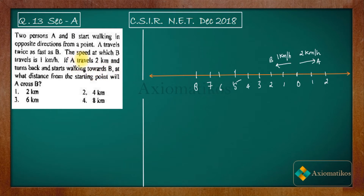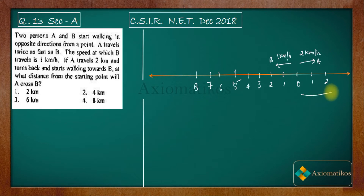A is traveling in one direction, but after traveling two kilometers he will turn back and start walking in the same direction as B. So A travels in this direction, but after reaching the two-kilometer point he comes back along the same path.